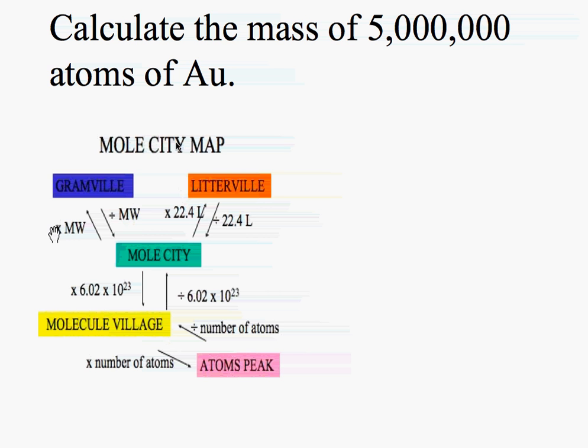So here in this instance we're told that we're in atoms peak and we want to go to Gramville. So in order to do this we have to divide by the number of atoms, divide by 6.02 times 10 to the 23rd to give us our answer in moles, and then multiply times the molecular weight.